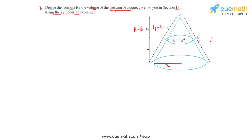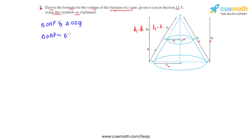Now if we consider two triangles — triangle OAP and triangle ODQ — we see that these two triangles are similar to each other. So we write: triangle OAP is similar to triangle ODQ.